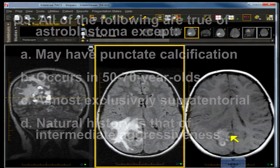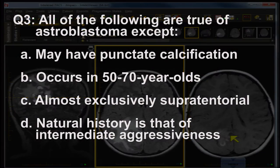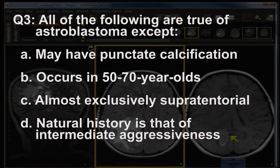Question 3: All the following are true of astroblastoma except — A. may have punctate calcification. B. occurs in 50 to 70-year-olds. C. almost exclusively supratentorial. D. the natural history is that of intermediate aggressive behavior.